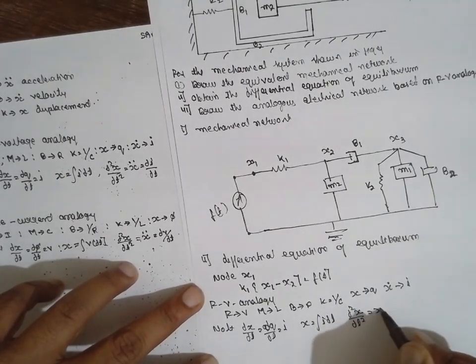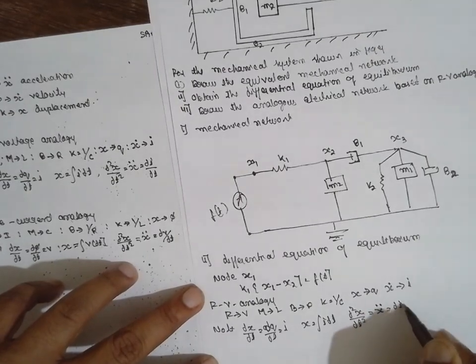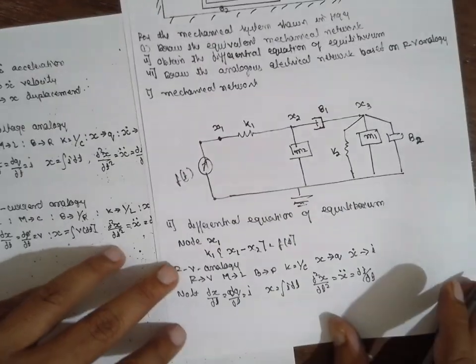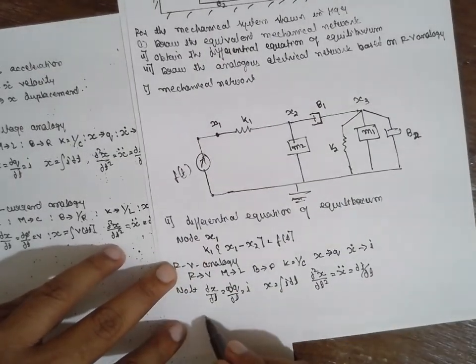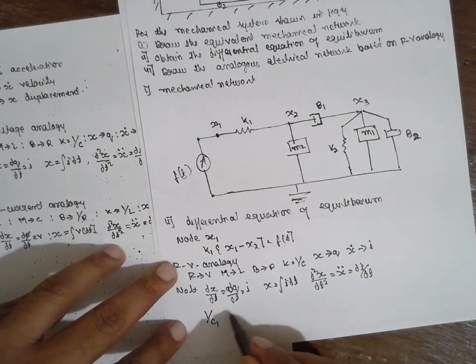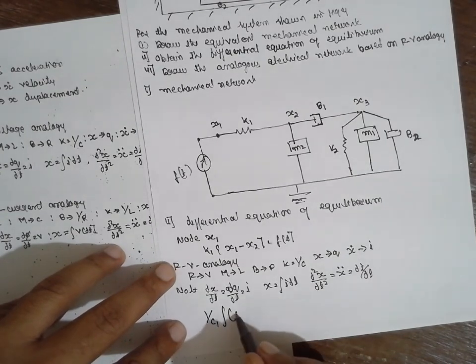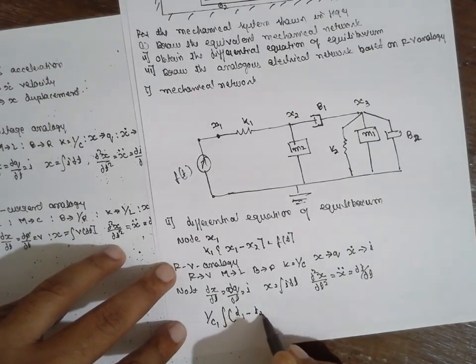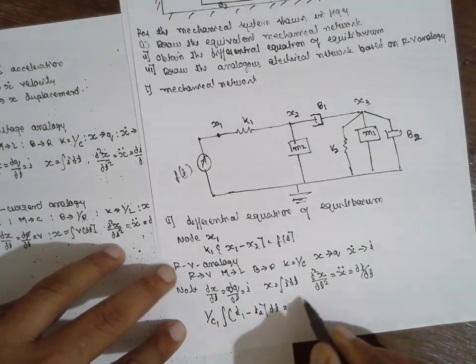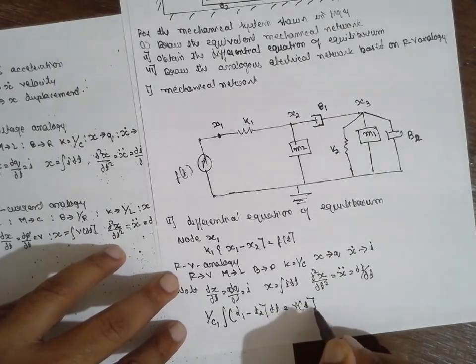Now K1 equals 1 by C1. Integration of I1 minus I2 dt equals V of t.